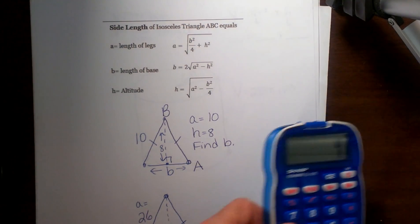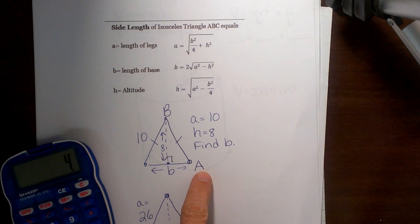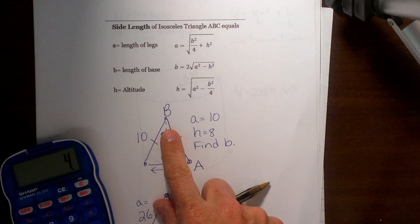We are going to use shortcut formulas for isosceles triangles to find the base of this triangle and also to find the height. So let's start with this base formula first.